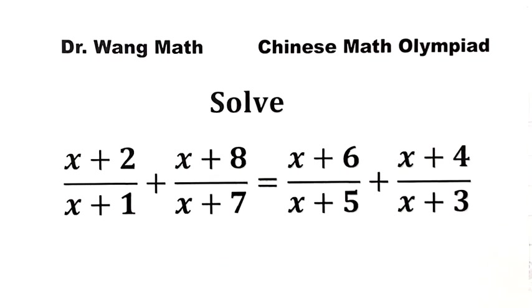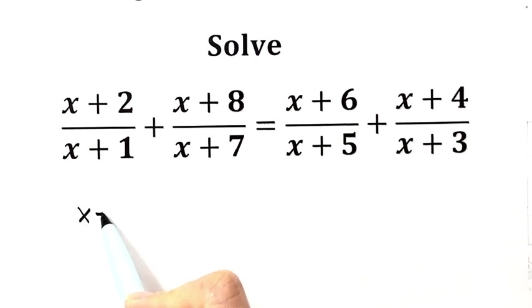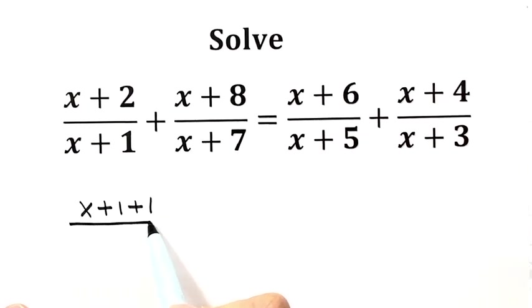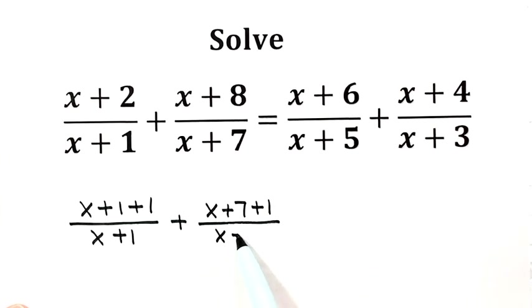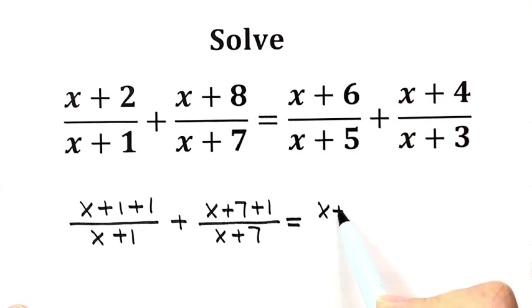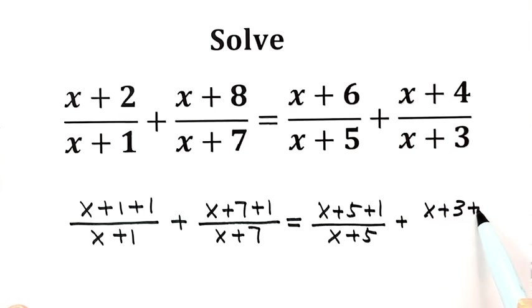Let's start from the first fraction: x+2 is just (x+1)+1, divided by (x+1). The second one: x+8 is just (x+7)+1, divided by (x+7). The third one: x+6 is just (x+5)+1, divided by (x+5). And the last one: x+4 is just (x+3)+1, divided by (x+3).